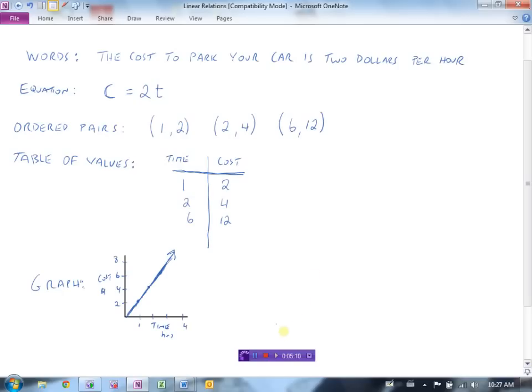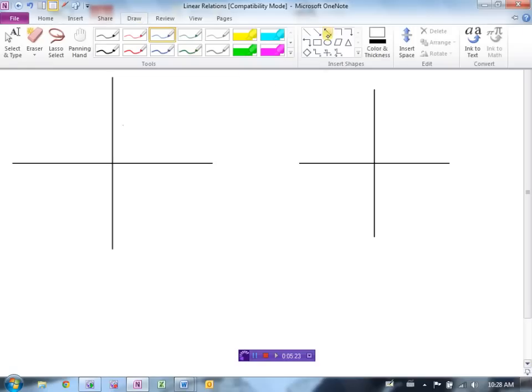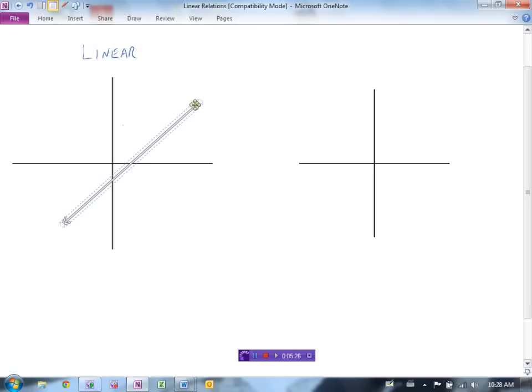Now in this particular video we're going to only look at linear relations. So let's see what the difference between linear and non-linear relations are. Well we kind of mentioned this already and it's pretty straightforward. The word linear has the word line in it. So a linear relation would be a relation that would have a straight line. That would be a linear relation. Something that is non-linear then obviously would be something that would have a bit of a curve to it. There's an example of a non-linear relation. It has a curve.